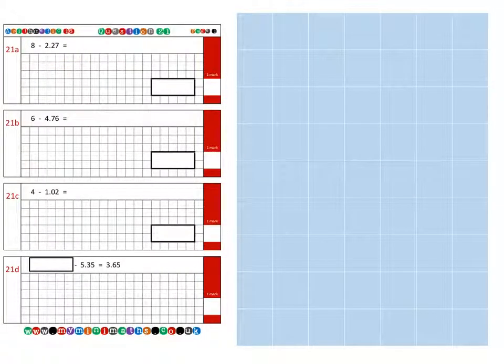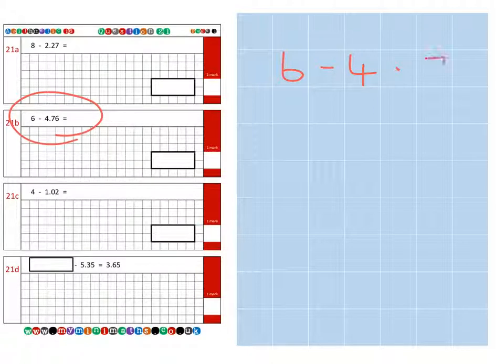And next we're going to look at question 21b, and for this we're going to look at mental options and how we can do this in our head. So if we write out the question which is 6 subtract 4.76.